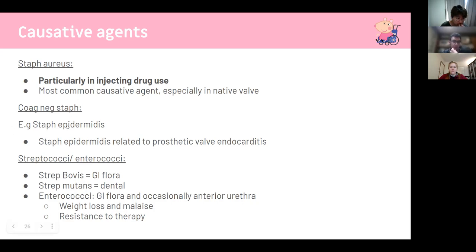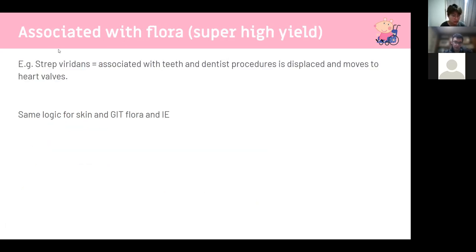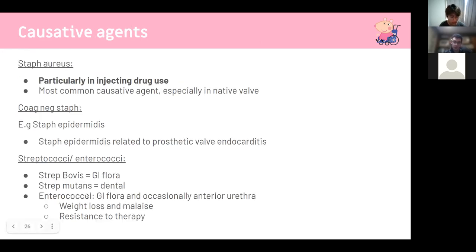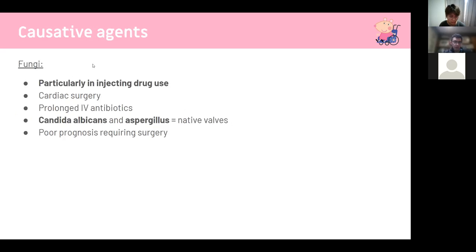Staph aureus with injecting drug use is the most common causative agent for native valve endocarditis — buzzwords are Staph aureus, injecting drugs, and tricuspid valve, though mitral and aortic are most common overall. Coagulase-negative Staph epidermidis is commonly related to prosthetic valve endocarditis as normal skin flora. Streptococci and enterococci from GI flora include Strep bovis and enterococci. For dental procedures, the two key organisms are Strep mutans and Strep viridans — this will be asked. If it comes from the gut, think enterococci.